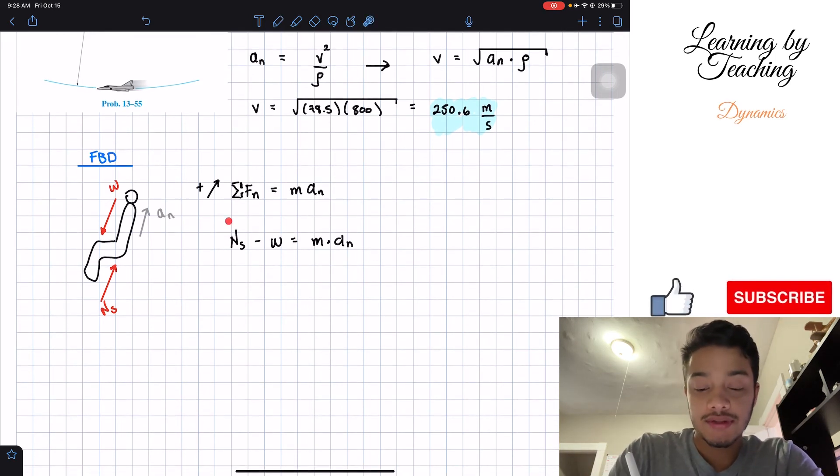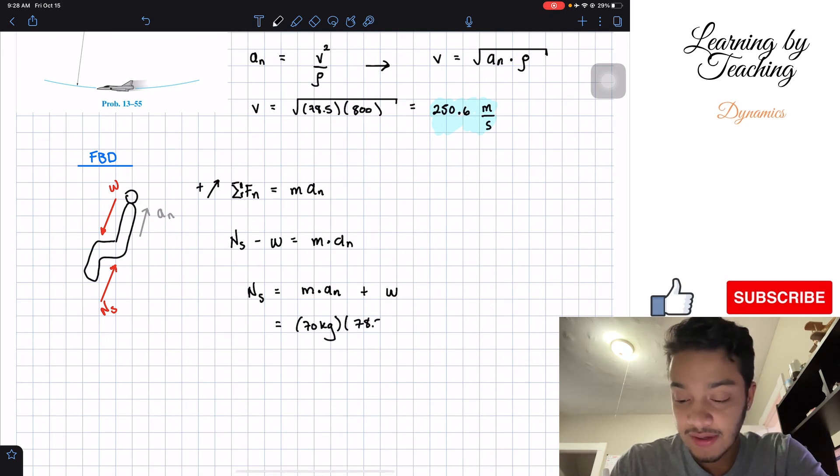The main goal is to solve for our normal force that we're exerting on the seat. So, we're going to say that the normal force exerting on the seat is equal to my mass times my acceleration, and we're going to add the weight. If we plug in the numbers where we know the mass is 70 kilograms, we got the acceleration to be 78.5 meters per second squared, plus my weight, which is equal to mass times gravity, so mass, which is 70 kilograms, times gravity, which is 9.81 meters per second squared.